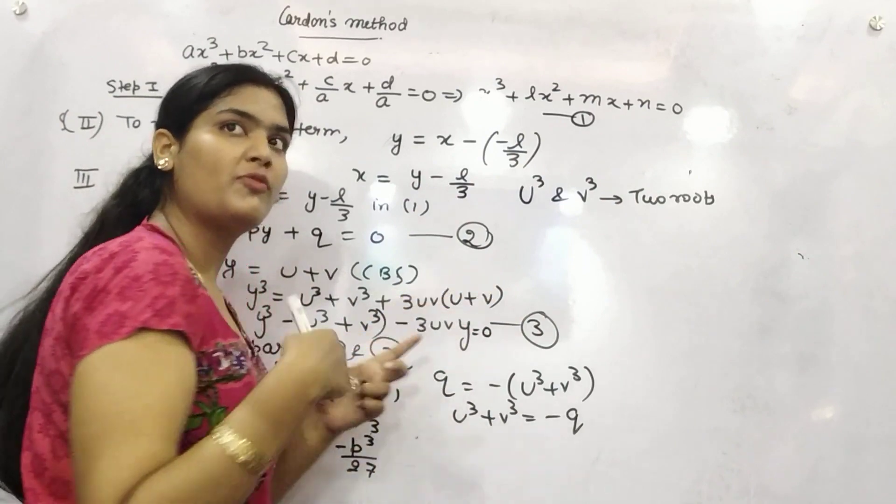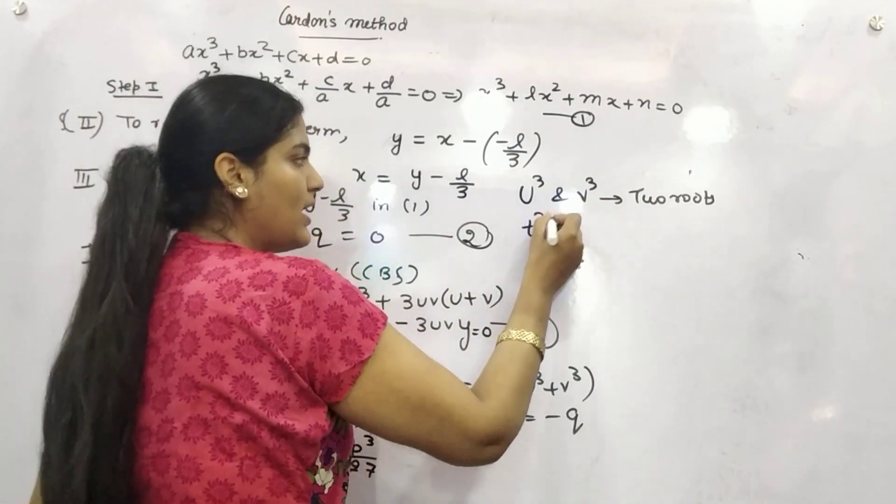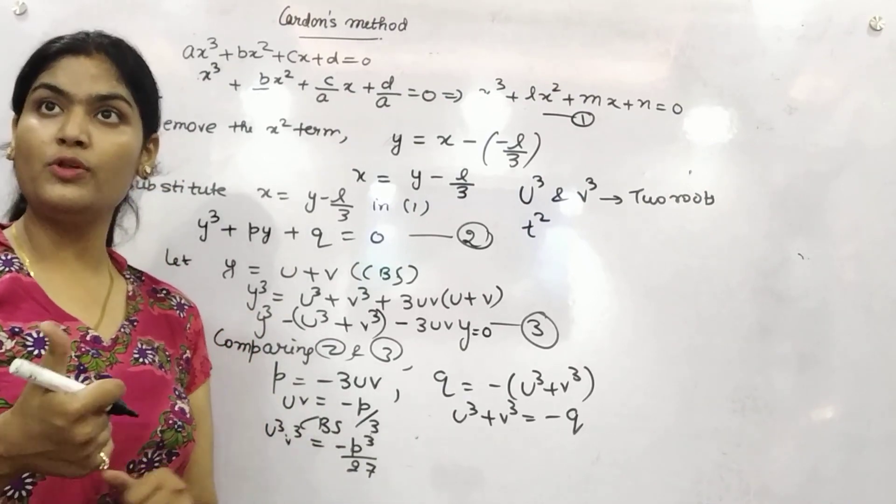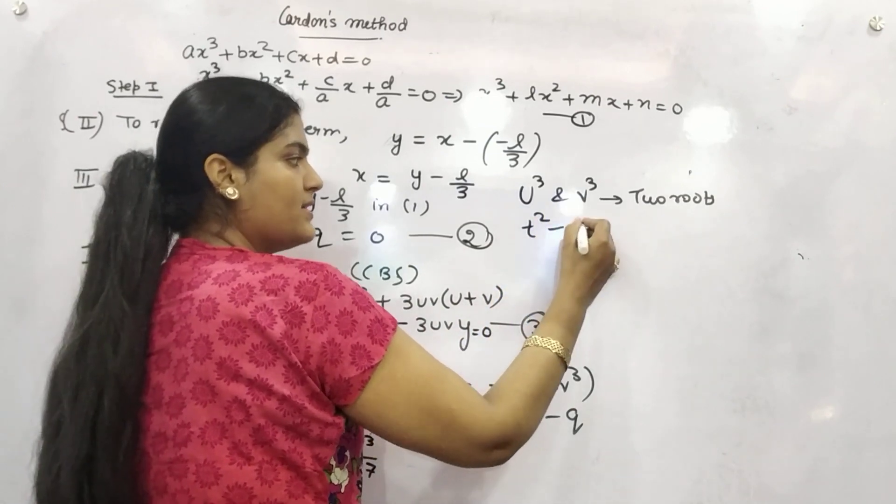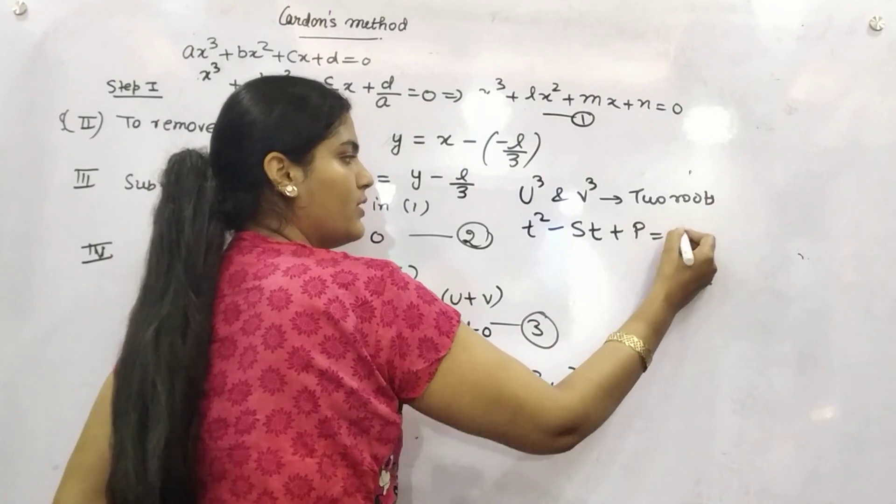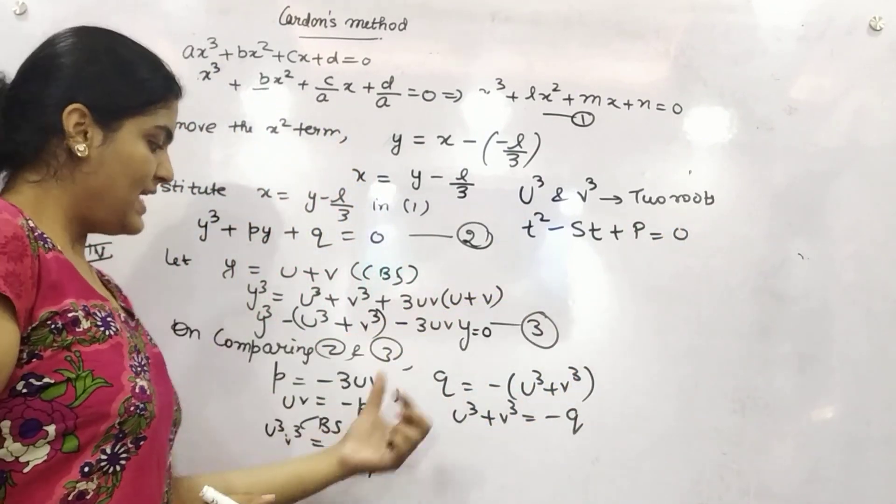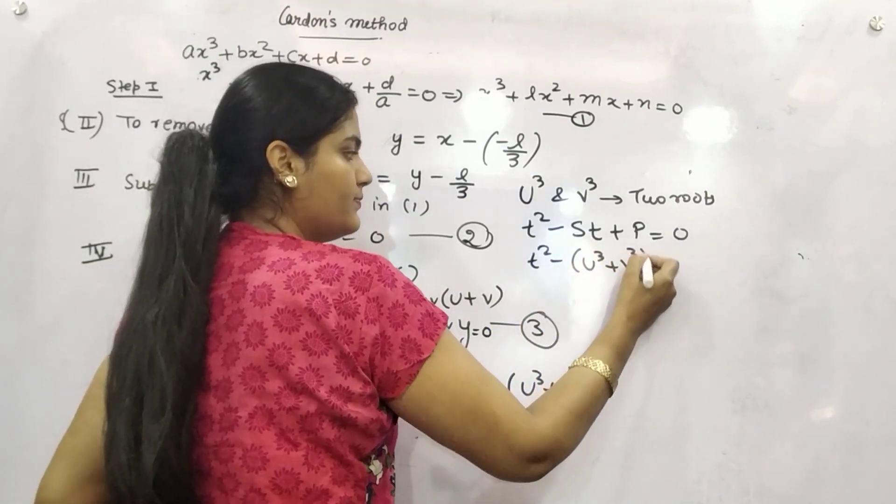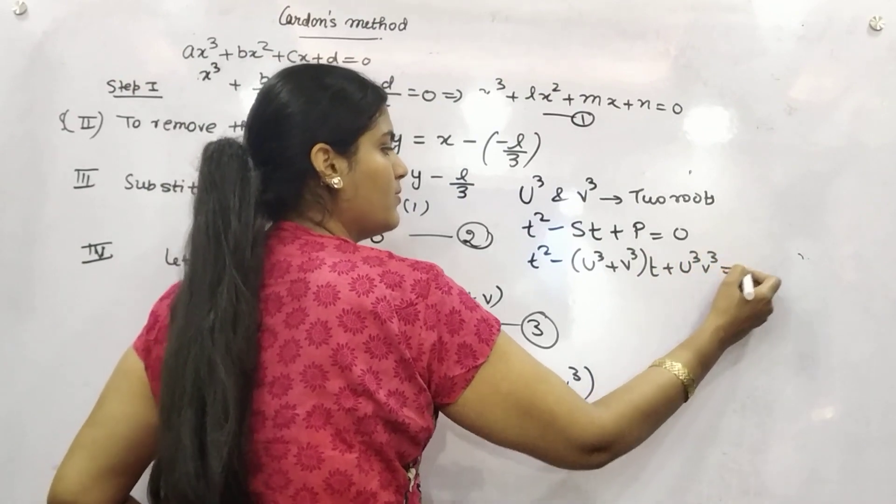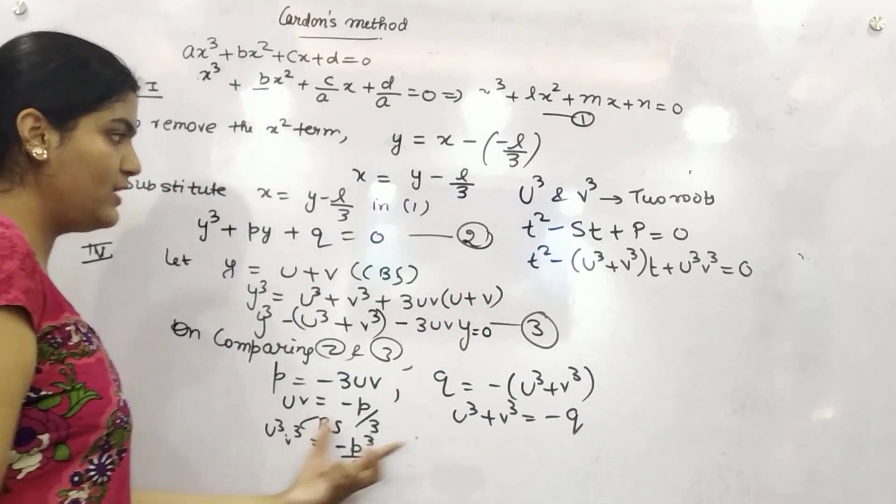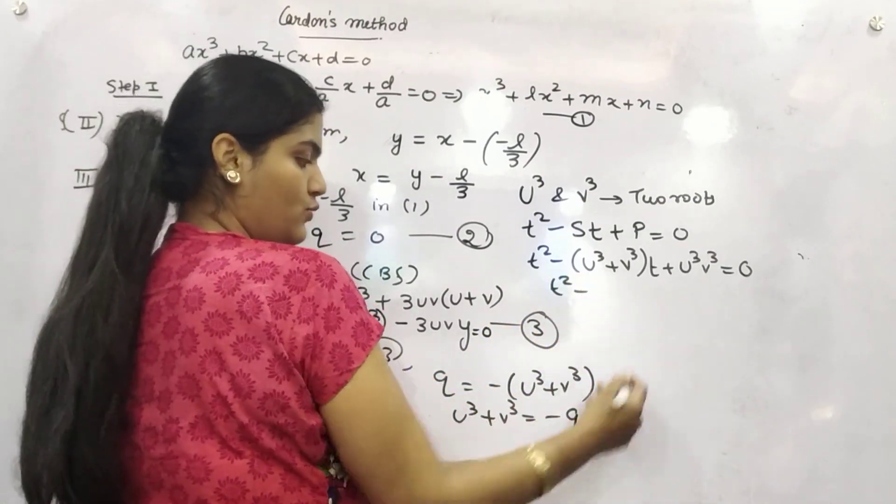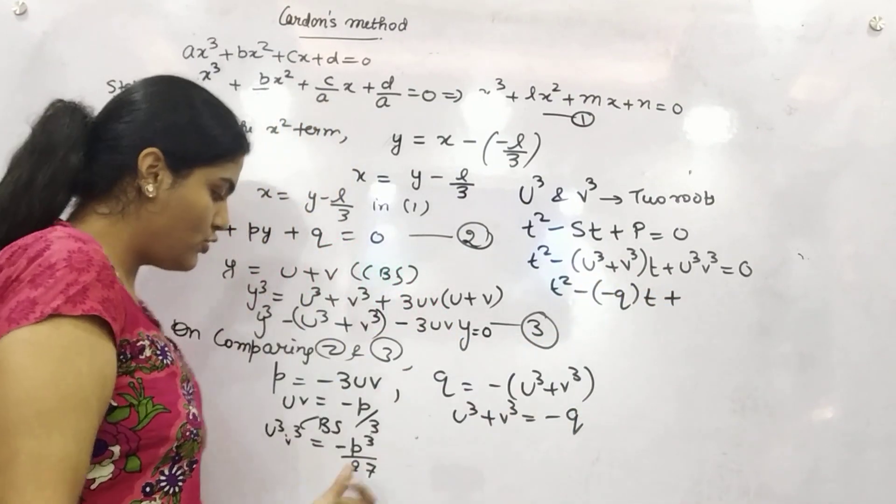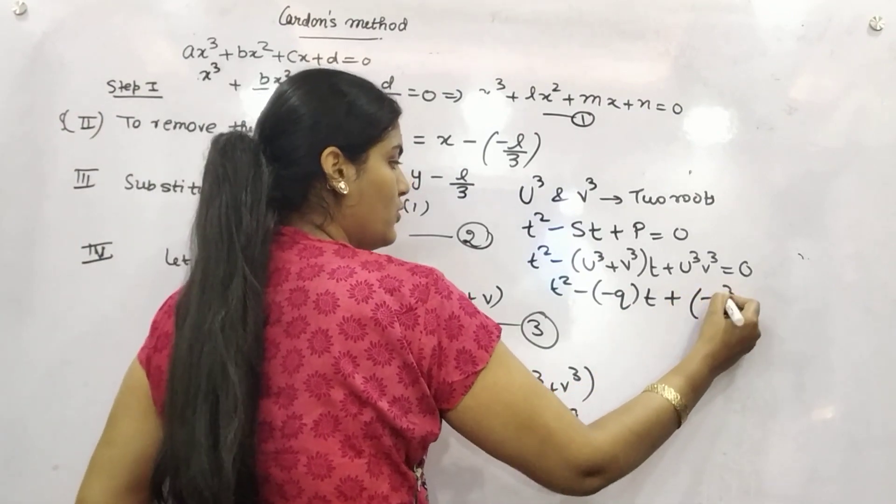Let's say u cube and v cube are your two roots because we are transforming into a quadratic equation. So u cube, v cube are two roots of any particular equation, let's say t square. If we will have roots, then how we can find out the equation, quadratic equation? You know the formula, variable square minus sum of the root plus product of root. So, let's say u cube and v cube are two roots, so sum will be u cube plus v cube and product u cube, v cube. And you already have got the values of u cube plus v cube which is minus q and u cube, v cube is minus p cube by 27.